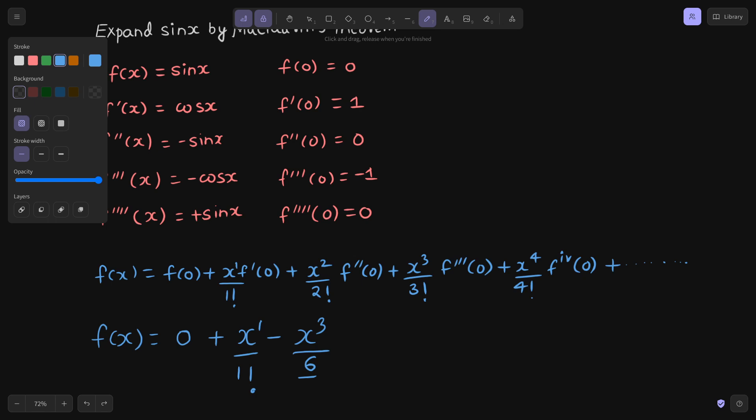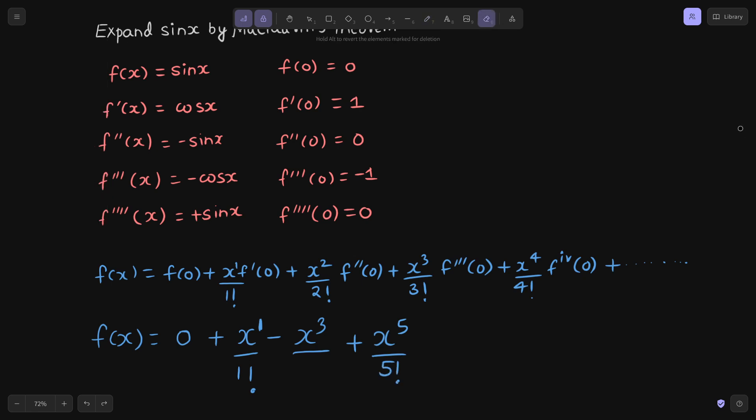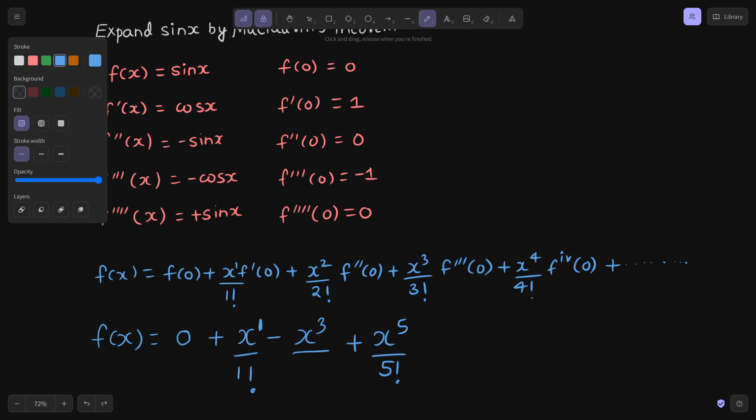So next term, the power of x is odd: 1, 3, then 5. But with 5 you will get plus. So x power 5 by 5 factorial. Let's write this as 3 factorial only to maintain consistency. Next term, can you imagine? Alternate plus minus, so minus sign. Power is jumping by 2, so x power 7 over 7 factorial, plus so on.